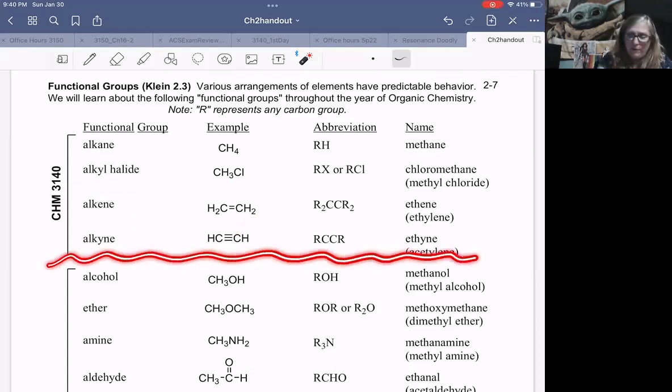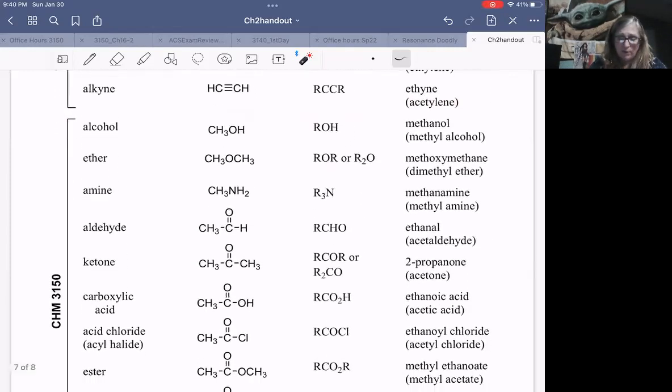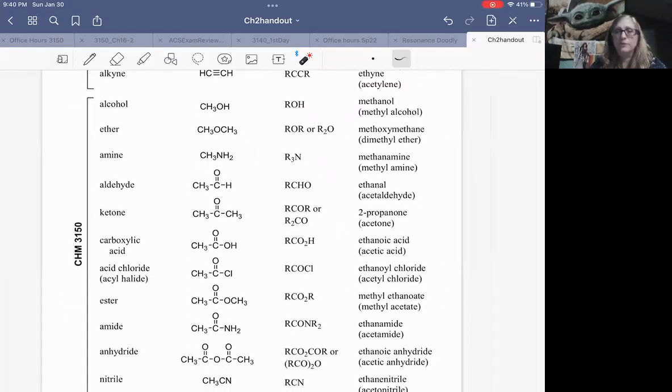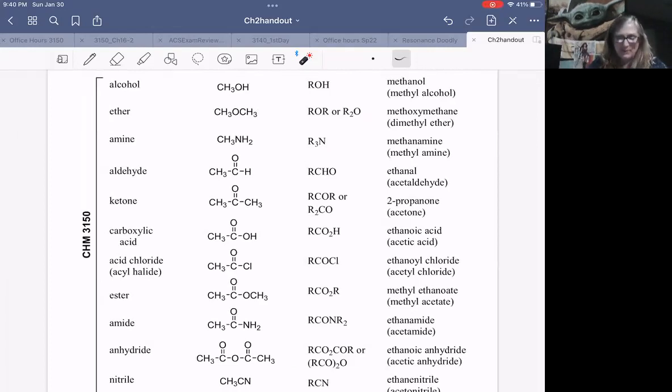We're learning very few functional groups in first semester organic. That's because we're going to spend a lot of our time, like the first half of the semester, learning the language of organic chemistry and the mechanics, how to draw structures, how to think about reactivity and so on. Now when we move to 3150, this is the march of the functional groups. We're going to learn every other functional group in 3150.